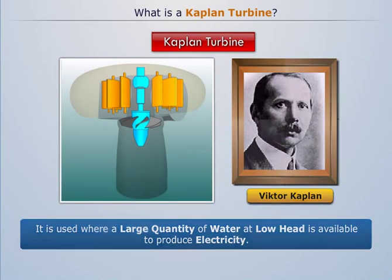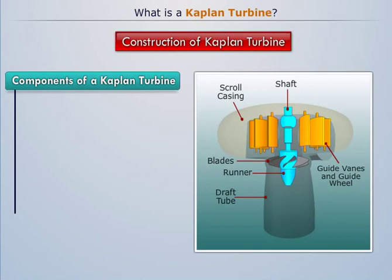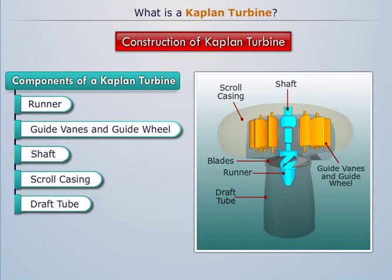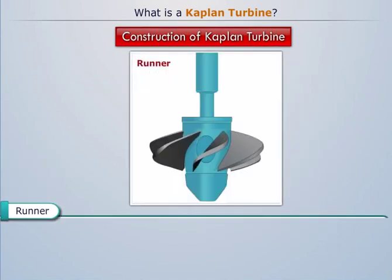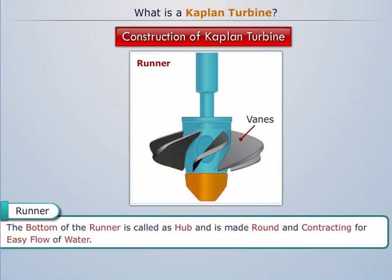Let's first understand the construction of the Kaplan turbine. The components used in the Kaplan turbine are: runner, guide vanes and guide wheel, shaft, scroll casing, and draft tube. The runner is the rotating element of the Kaplan turbine that consists of a number of vanes fixed at its surface. The bottom of the runner is called the hub and is made round and contracting for easy flow of water.